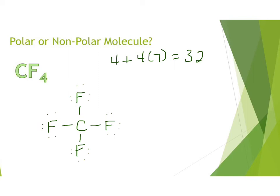If we then look at our electronegativity values, carbon is 2.5, fluorine is 4.0. So we do the large number, subtract the small number, and that gives us a difference of 1.5. So that means these bonds are polar. It has polar bonds.